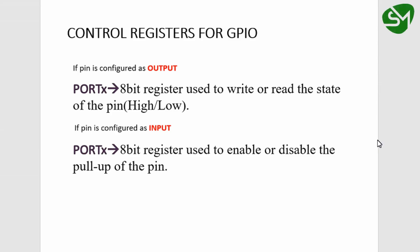Hello everyone. This is a continuation from the previous lecture. In this lecture we will see two other registers. The next register is PORTX, and this register is used for reading or writing the state of the pin. If a pin is configured as output, this PORTX register is used for writing to that pin, and if the pin is configured as input, this PORTX register is used for enabling or disabling the pull-ups of the pin.